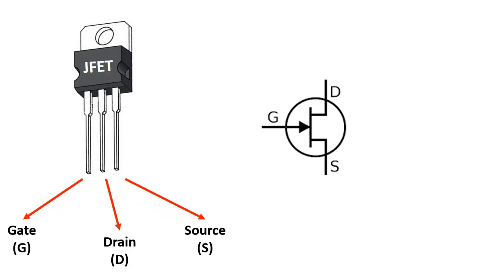Their locations are not always like this. They can change. In its symbol, Gate, Drain, and Source pins are like this. So, how does the JFET transistor work? With a small trigger voltage coming from the gate, a large current is controlled from drain to source.